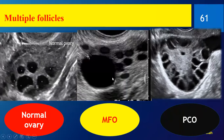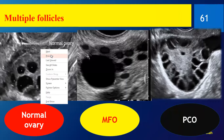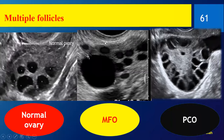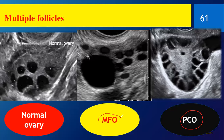Is this normal or multifollicular? The follicles are not so many and not arranged in the periphery or central — this is a normal ovary. Looking at all three side by side: in PCO the ovary is enlarged with many small follicles arranged in the periphery and an echogenic center. In multifollicular ovary there are many follicles but they are in the center and periphery, some are enlarged, and the ovary is not overly enlarged. In the normal ovary there are some follicles arranged normally.